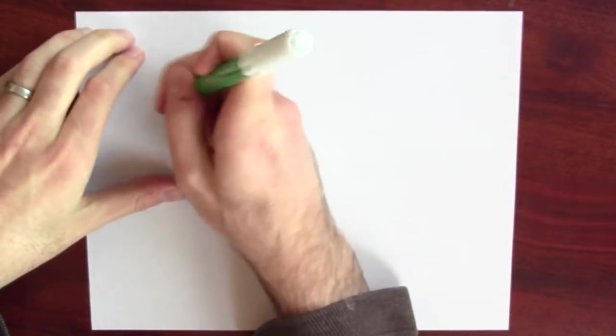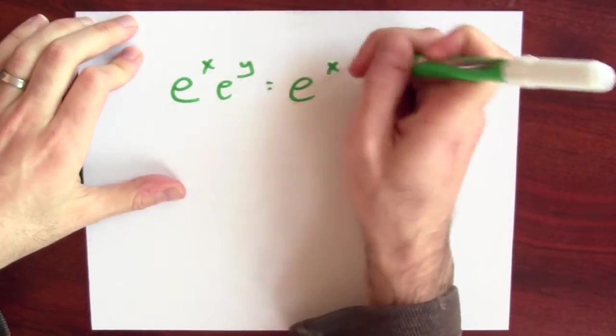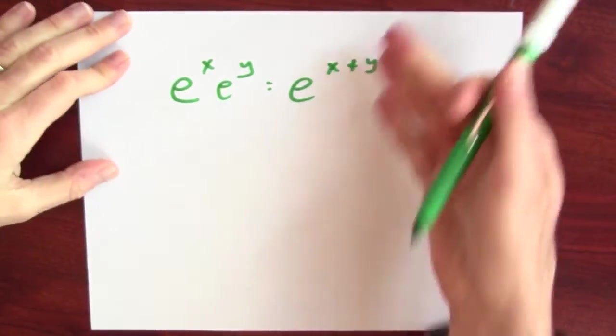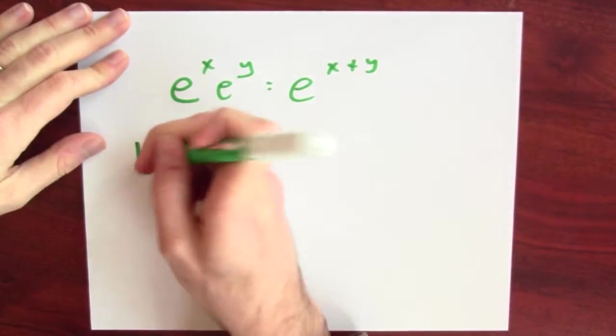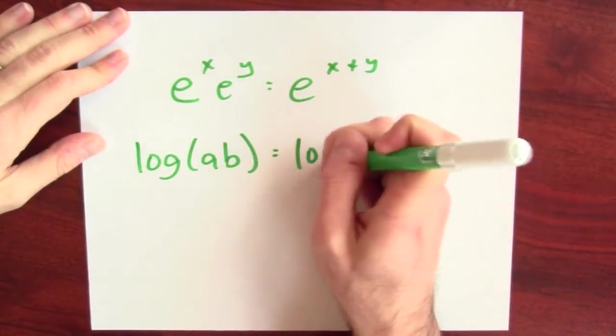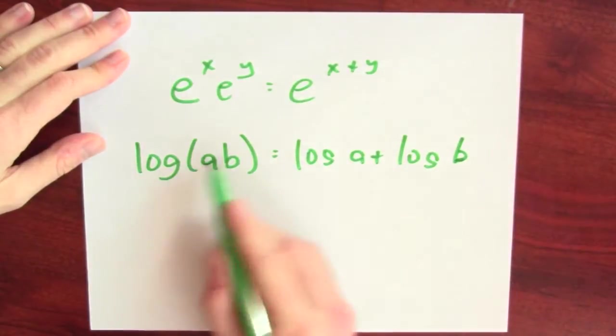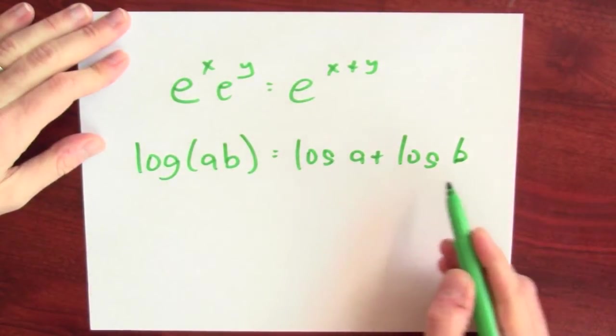Admittedly, people don't talk too much about quarter squares nowadays. What you probably heard a lot more about is logarithms. There's this property of exponents that e to the x times e to the y is e to the x plus y. The corresponding property of logs is that log of a product is the sum of the logs. The log of a times b is log of a plus log of b.